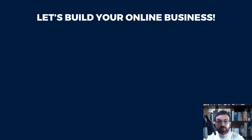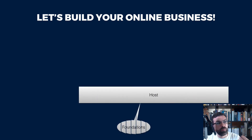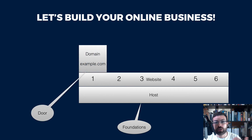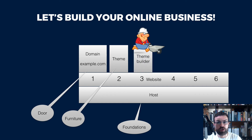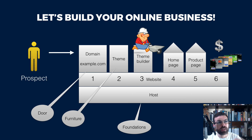Let's think of your online business like a house. First we need to lay the foundations, which is your hosting. Then we build your website, split into six sections: the first is your door, which is your domain name. Then we get a theme and theme builder, which is your furniture. After that, we set up your home page, content page, and product page, and enable you to accept payments so your prospects can come in and receive the value you deliver.